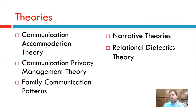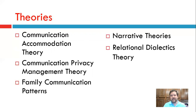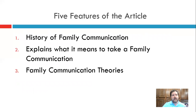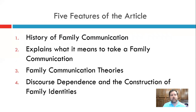There can be a critique any time we present theories — and the critique is not so much on what the authors did, since I think Galvin and Braithwaite nailed it with these five theories. But a larger critique aimed at the field is: how inclusive are these theories, and have they been developed with a variety of families or a variety of identities? What kinds of bodies and identities are we dealing with that created these theories? The fourth feature of the article addresses this by looking at discourse dependence and the construction of family identities.